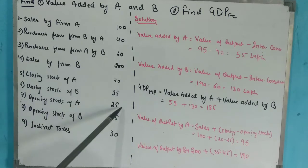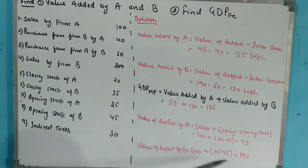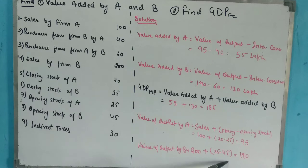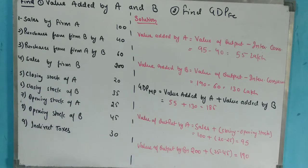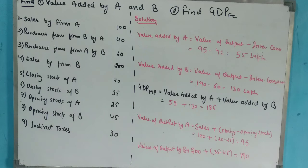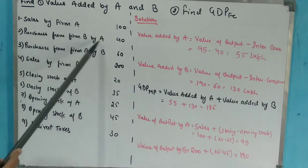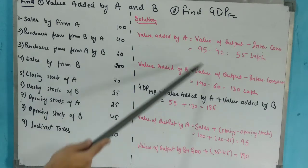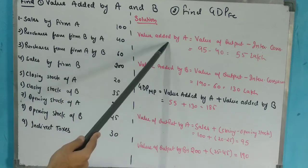Sales of A = 100; Closing Stock = 20; Opening Stock = 25. So Value of Output by A = 100 + 20 − 25 = 95. Similarly, Value of Output by B = 200 + 35 − 45 = 190. Now for A: Value of Output = 95, and Intermediate Consumption = Purchases from B by A = 40.